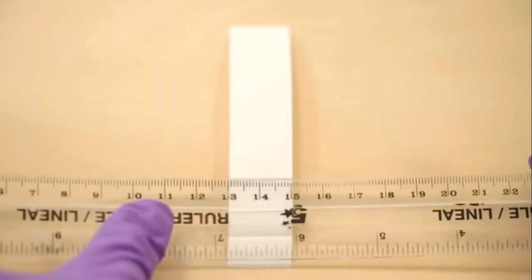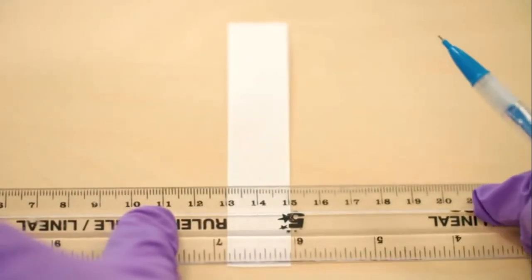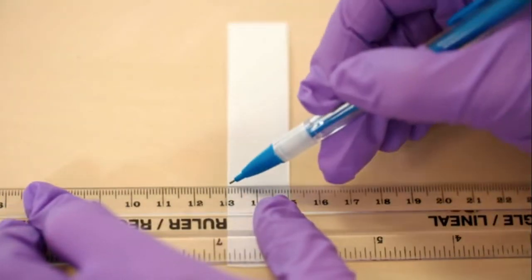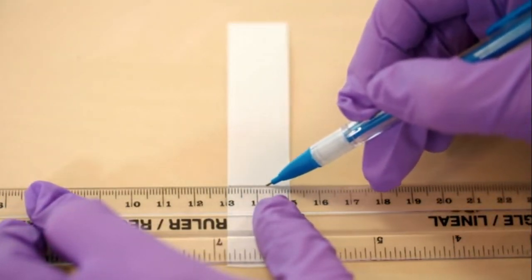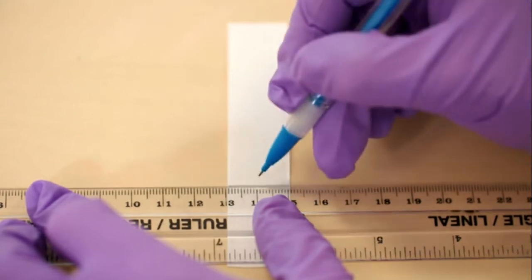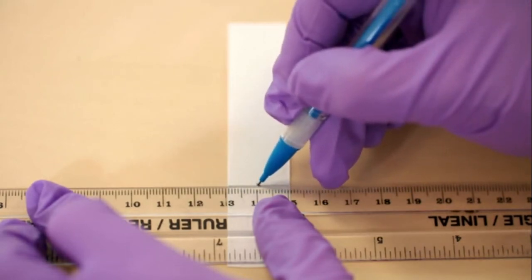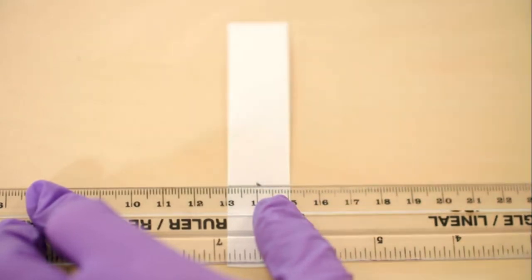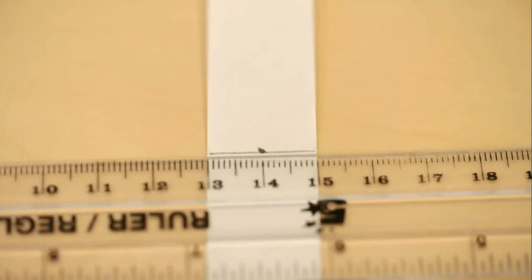A horizontal line is drawn using a ruler and a pencil about 3cm from the base of the paper strip. A single dot is added to the middle of the horizontal line. The chromatography paper should look like this before any leaf extract is added.